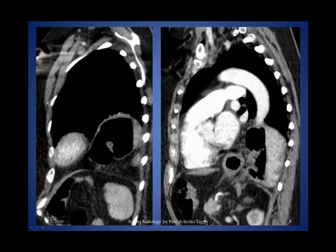Here we have a sagittal CT with contrast. We can see the aortic arch and part of the heart. Typically you should see a nice diaphragmatic line here, but there's fat and bowel in the posterior left chest cavity above that line. We can see part of the diaphragm on either side, and then there's a hole — with bowel coming through into the left chest cavity. This is called the collar sign, which will be shown on the next slide.